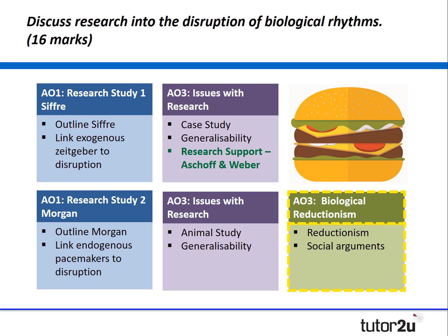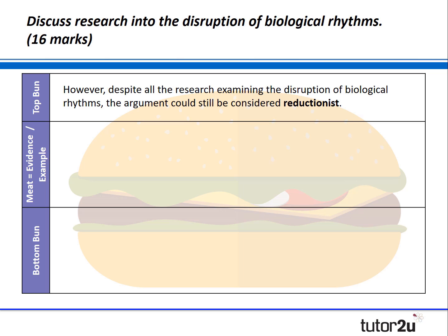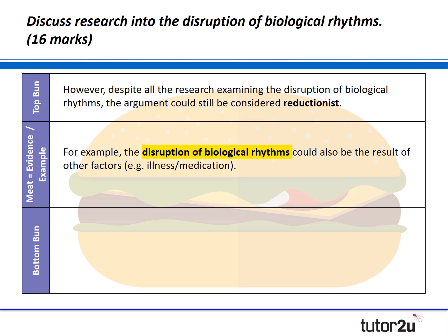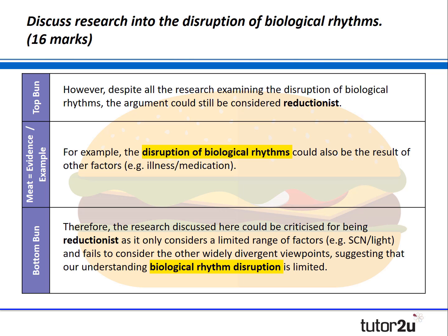That one double-whopper paragraph and a single burger here might not be enough, so I'd be inclined to bring in an issue and debate — the idea of reductionism. You might say: despite all of the research examining the disruption of biological rhythms, the arguments could be considered reductionist. For example, the disruption of biological rhythms could also be the result of other factors, maybe illness or medication. Therefore the research discussed here could be criticised for being reductionist as it only considers a limited range of factors — the suprachiasmatic nuclei or light — and fails to consider other factors or divergent viewpoints, suggesting that our understanding of biological rhythm disruption is limited.